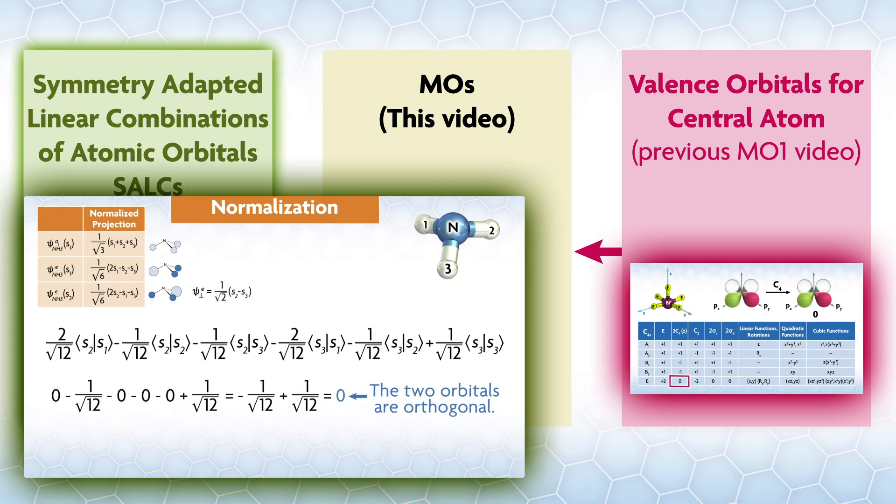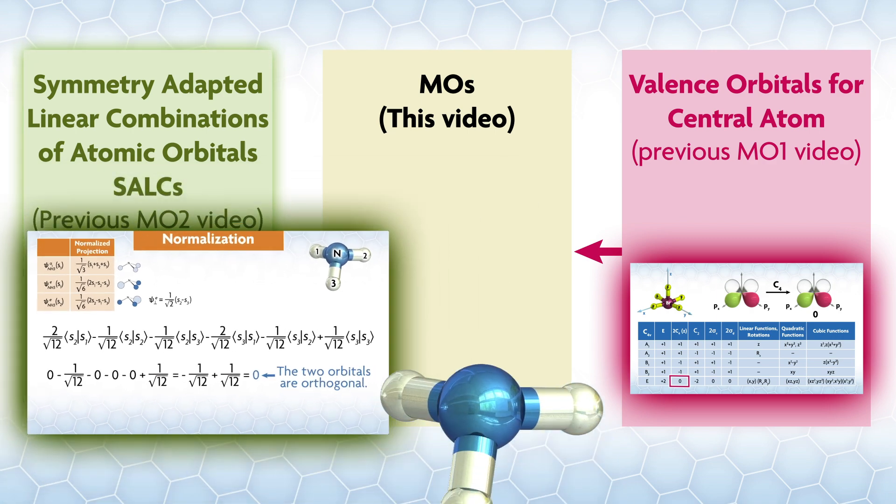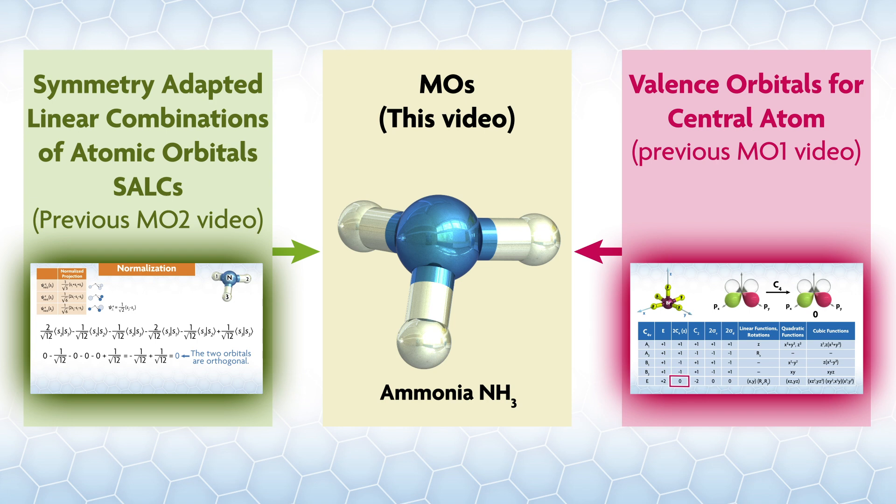In the second video, we discussed symmetry-adapted linear combinations of atomic orbitals, or SALCs, along with how they can be orthogonalized and how the projection operator can be used to draw a picture of the orbital. Here, we'll put all this together to get a molecular orbital diagram for a simple system.